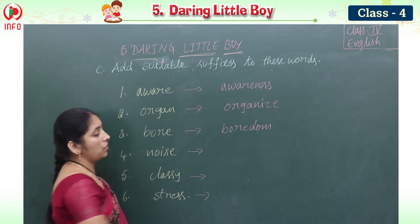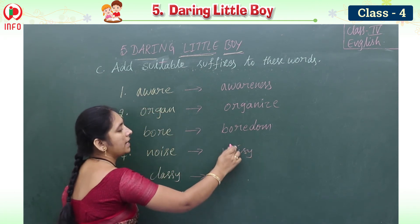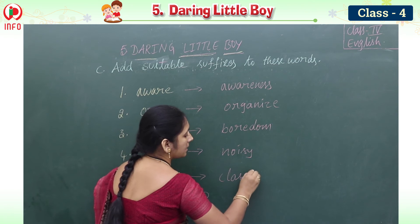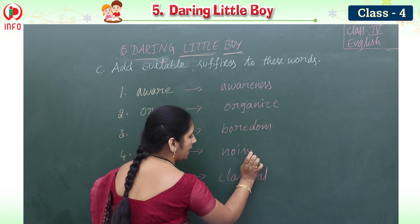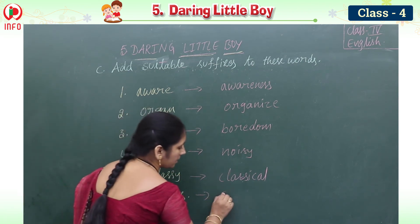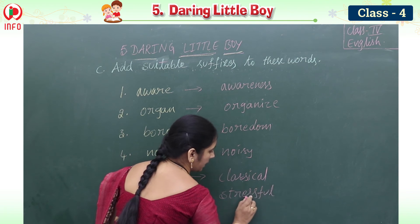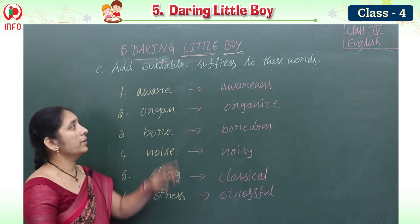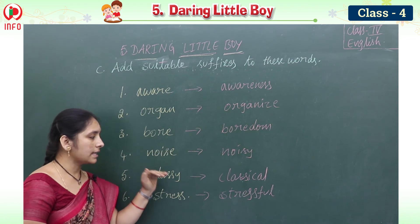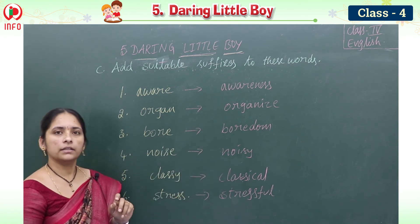Continuing with suffixes: noise becomes noisy by adding '-y'. Classy becomes classical. Stress becomes stressful by adding '-ful'. So: aware→awareness, organ→organize, bore→boredom, noise→noisy, classy→classical, stress→stressful. We add a suffix and get a new word.